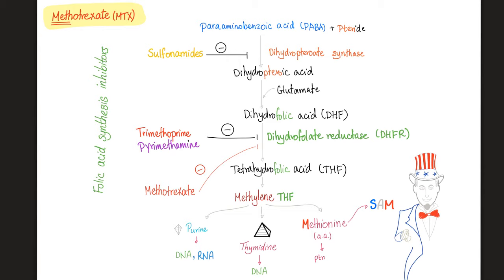Methylene THF will help make purines, pyrimidines, and methionine. Purines help in DNA and RNA. Thymidine is only in DNA, because RNA does not have thymidine — it has uracil instead. And methionine gives us the famous methyl group donor, SAM.